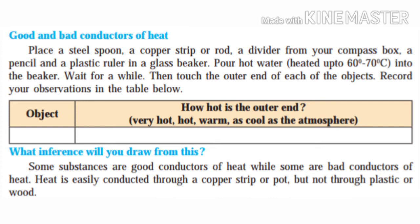Take a glass beaker with steel spoon, copper strip or rod, compass box divider, pencil, and plastic ruler. Pour hot water into it. Wait for some time, then touch the outer end of each object. Record your observations in the table. What inference will you draw from this? Some substances are good conductors of heat while some are bad conductors. Heat is easily conducted through copper strip or pot, but not through plastic or wood.